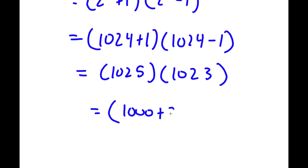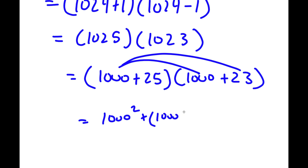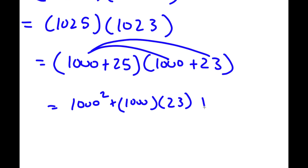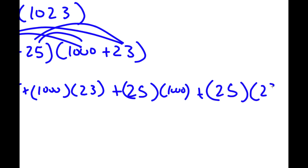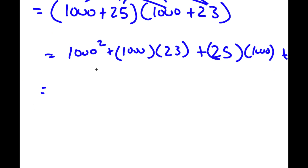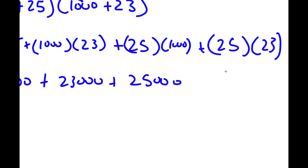Now I'm going to rewrite this as 1,000 plus 25 times 1,000 plus 23. To solve this, I'm going to distribute 1,000 first. So now I have 1,000 times 1,000, which is 1,000 squared, plus 1,000 times 23. And now I'm going to distribute 25: 25 times 1,000, and finally plus 25 times 23.